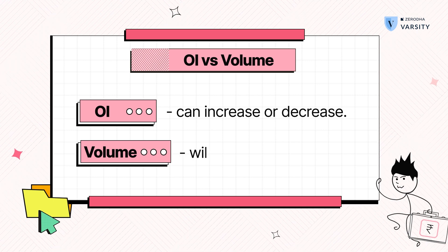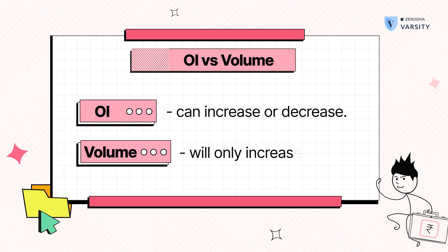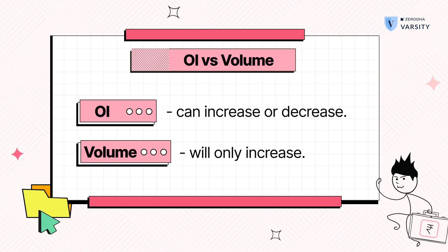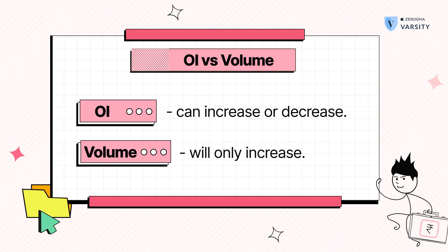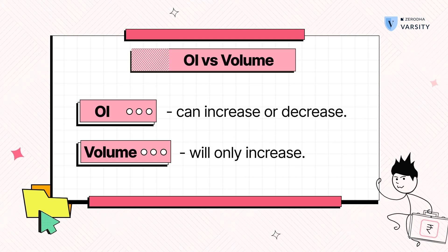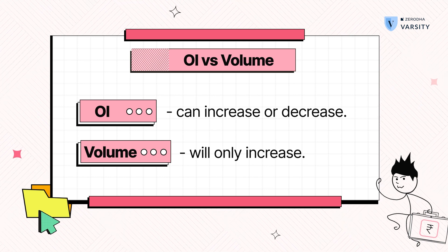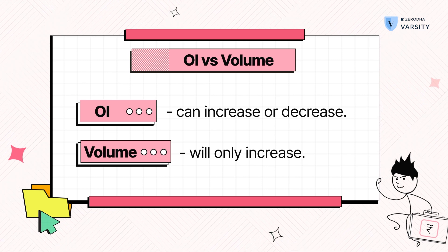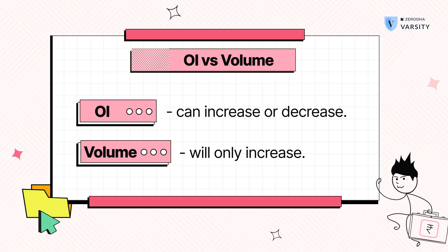Volume, on the other hand, starts at zero at the start of the day and as transactions progress it keeps counting upwards. It can't decrease — once a transaction has happened, it's happened — and when a new day begins it starts from zero again and counts upwards. That's the main difference between OI and volume.